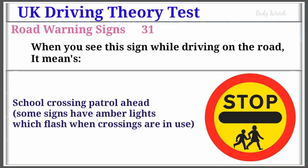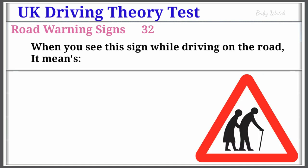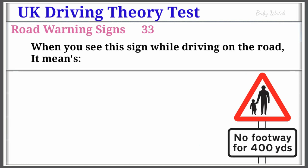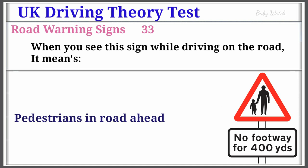UK Driving Theory Test Road Warning Sign Number 32: When you see this sign while driving on the road, it means frail or blind or disabled people; if shown, pedestrians likely to cross road ahead. Warning Sign Number 33: When you see this sign while driving on the road, it means Pedestrians in Road Ahead.